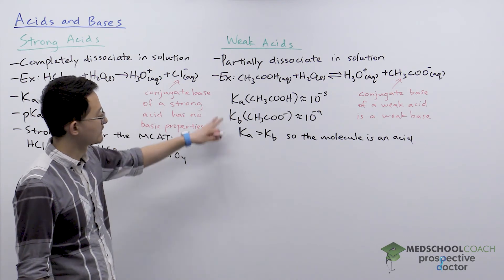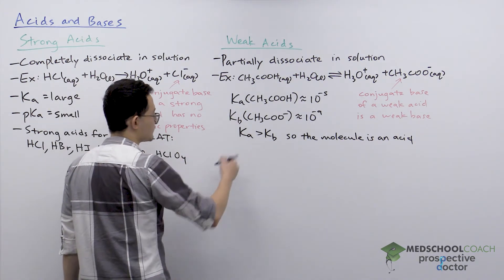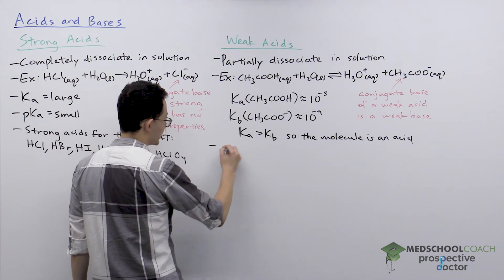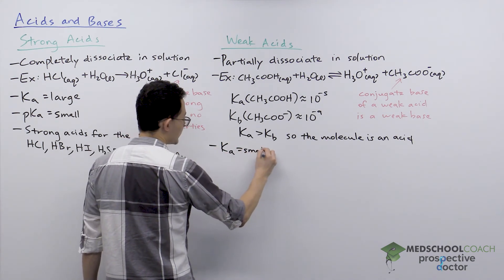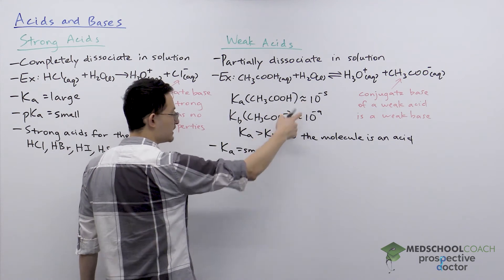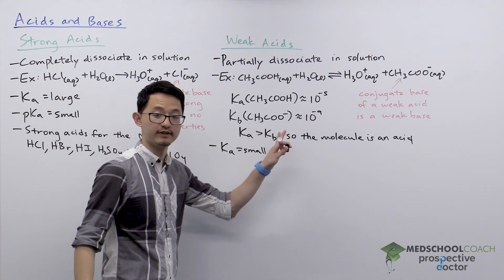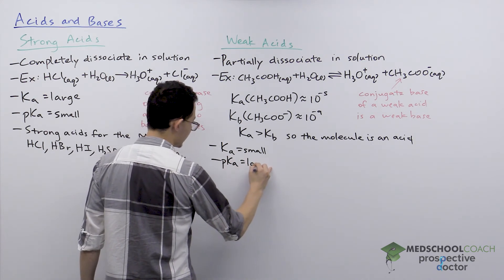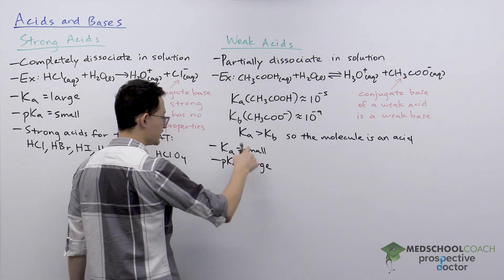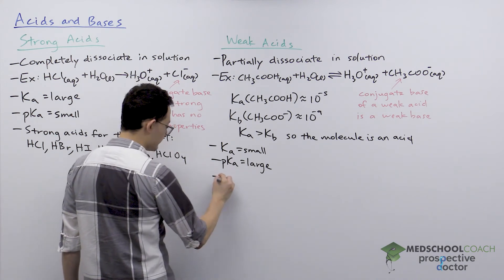Alright. Now, the other thing you can probably recognize from this example right here is that if you're looking at a weak acid, then its Ka is going to be small. Right? This is a very small value. However, the Kb is even smaller. We can also look at the pKa, which here is going to have a large value because they're inversely related.